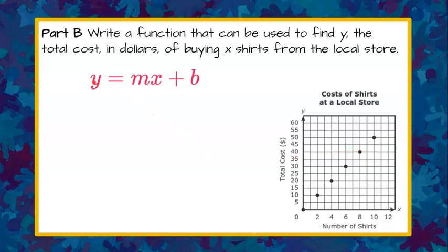Slope intercept form represents the equation of a line: y equals mx plus b. We need to identify the slope from our graph and the y-intercept. We know that our slope is 5 because in a linear function, your unit rate in a real-world problem represents your slope, which we did in part A.